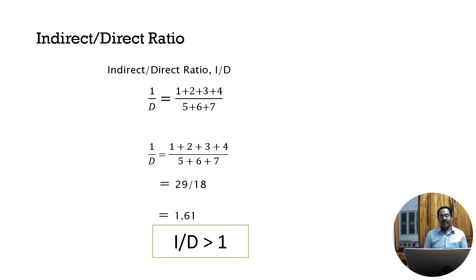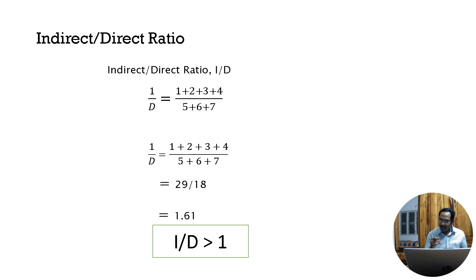In our case the I/D ratio is 1.61. Generally, if I/D is greater than 1, the teacher influences students indirectly. If I/D is less than 1, the teacher influences the class directly. Indirect influence is considered better than direct influence.